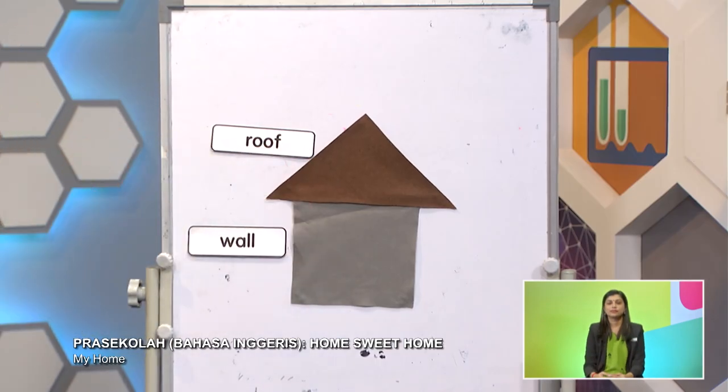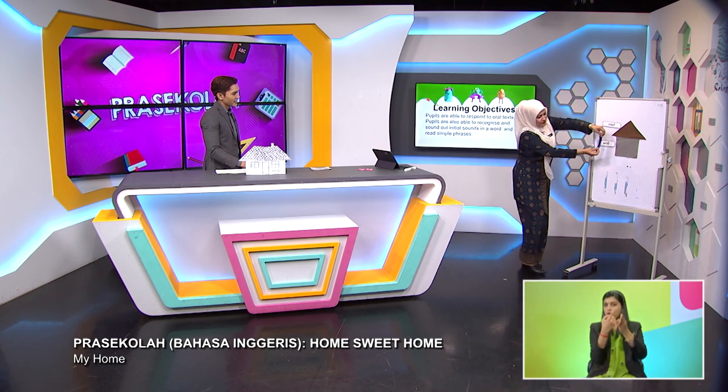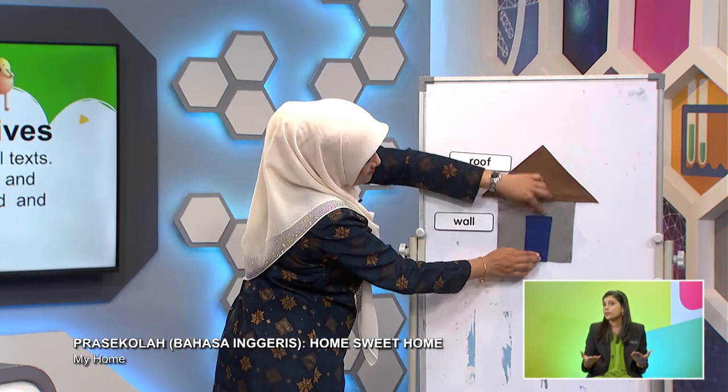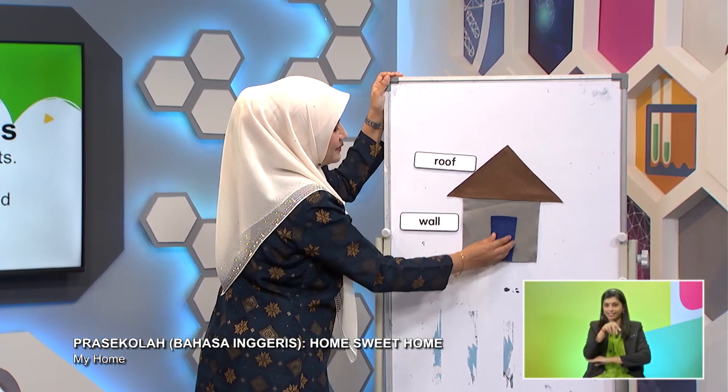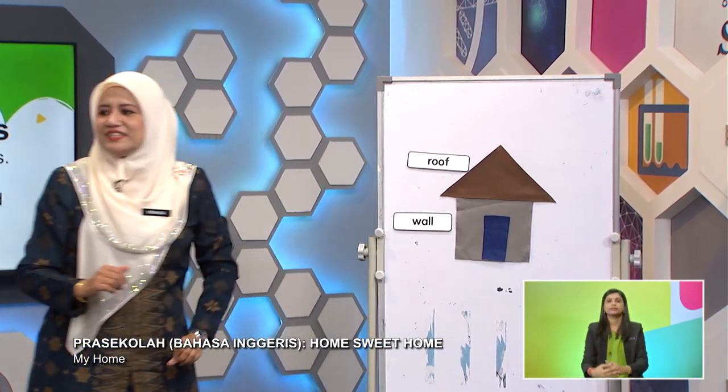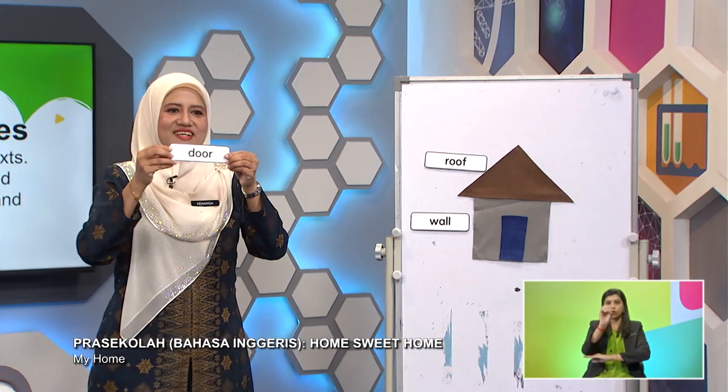Now, how do we get in or get out from our house? By using a... Is it a door? Yes, correct. It's a door. What shape is this, Hanif? It looks like a rectangle. Yes, it's a rectangle shape. Door — D-O-O-R. Door.